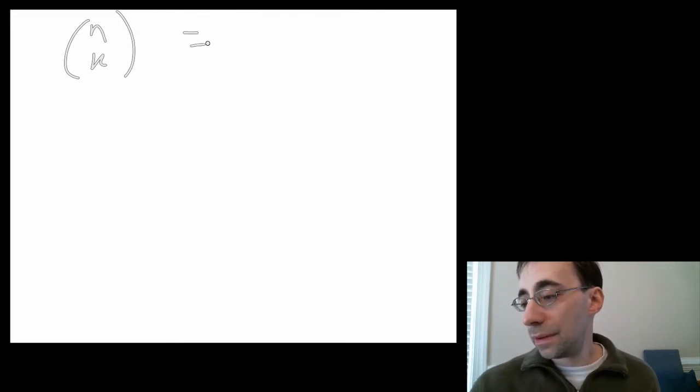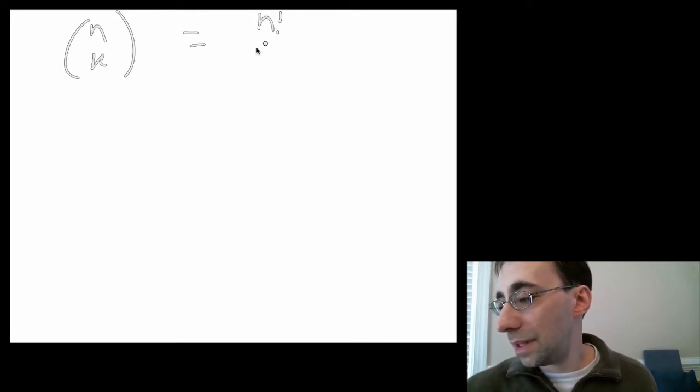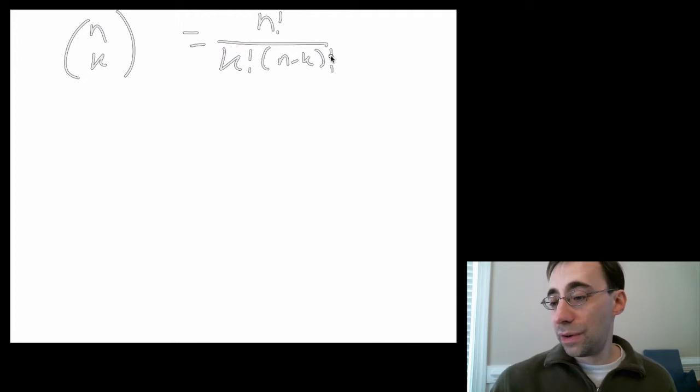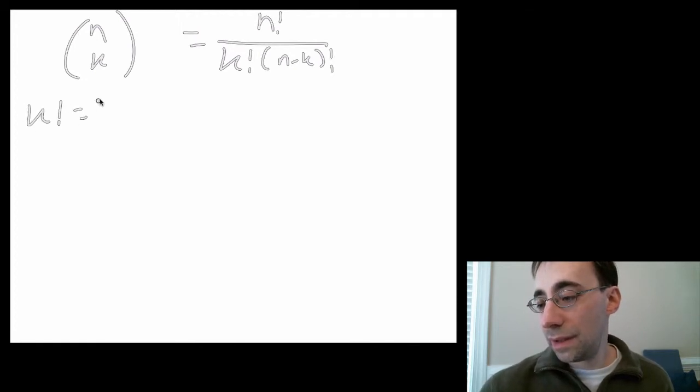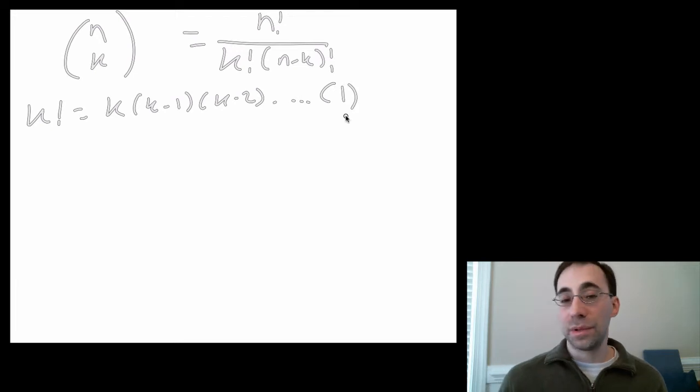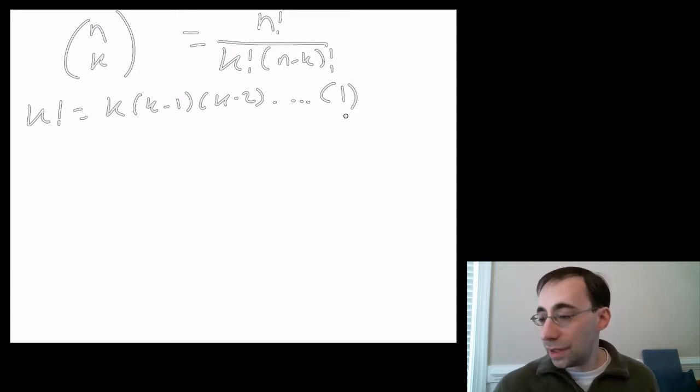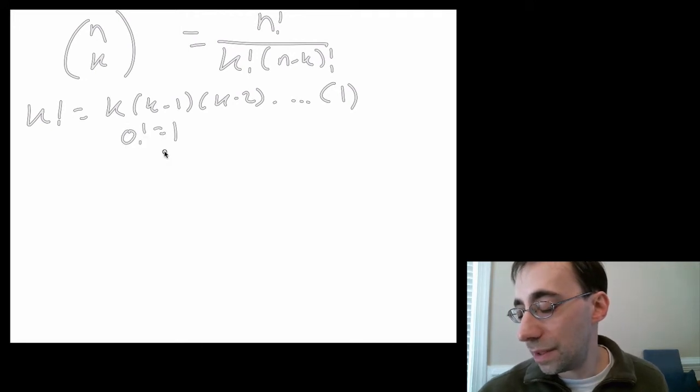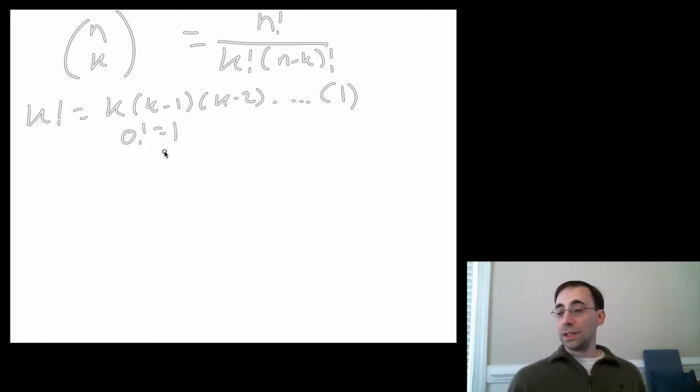Now, it turns out, this is pretty simple. It's n factorial over k factorial times n minus k factorial. k factorial equals k times k minus 1 times k minus 2 times dot, dot, dot, 1, which is k minus k. That's a factorial. Also, 0 factorial equals 1.